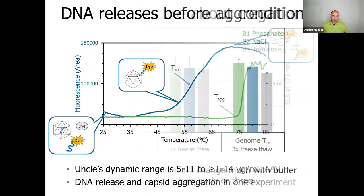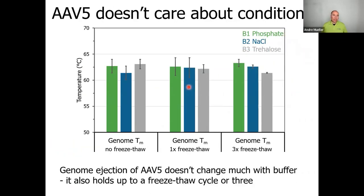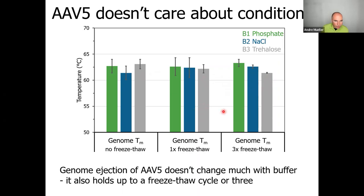Looking at AAV5 genome ejection in different conditions — phosphate in green, sodium chloride in blue, and trehalose in gray — across no freeze-thaw, one freeze-thaw, and three freeze-thaw conditions, there is not much change in genome ejection temperature with varying buffer or freeze-thaw cycles. The only possibly significant change is for trehalose between one and three freeze-thaw cycles, but overall AAV5 is again pretty unperturbed.